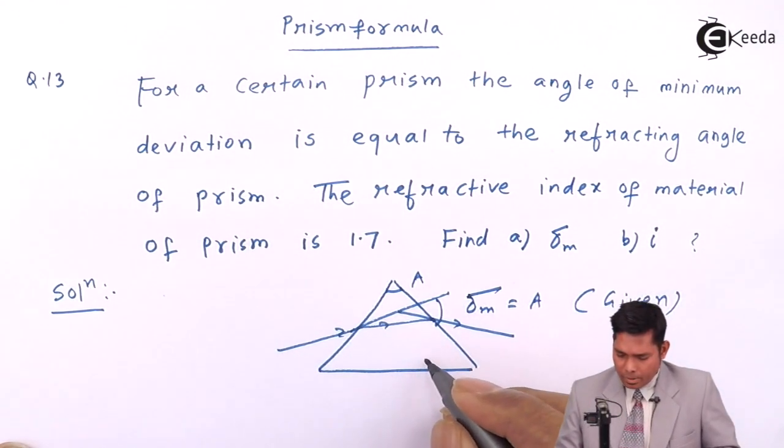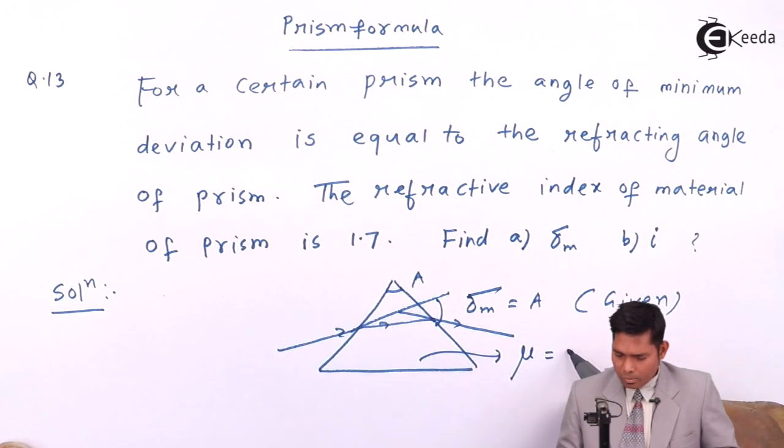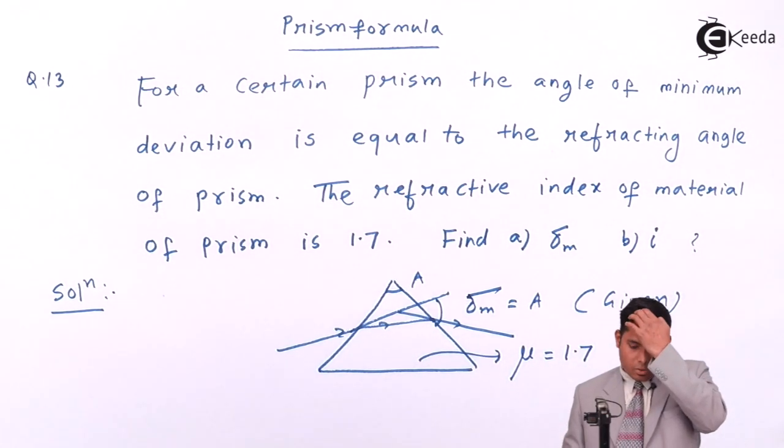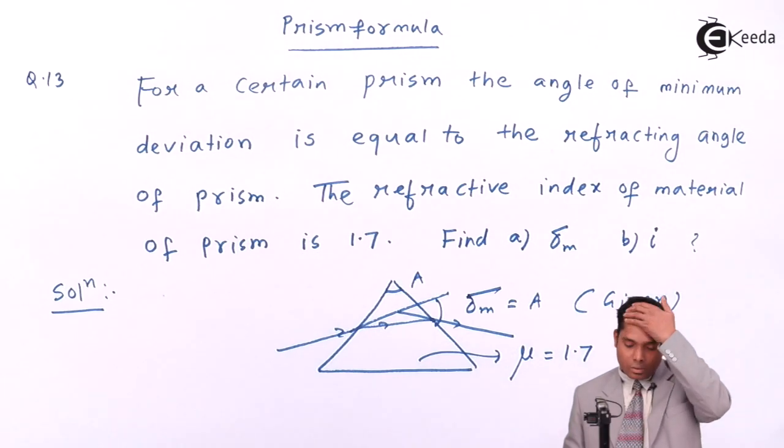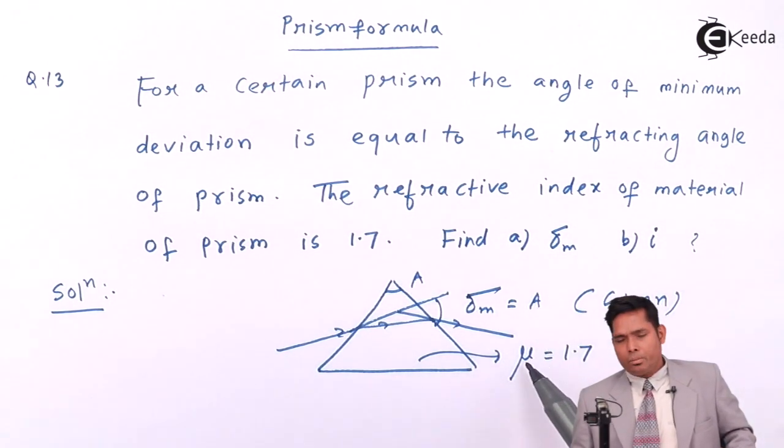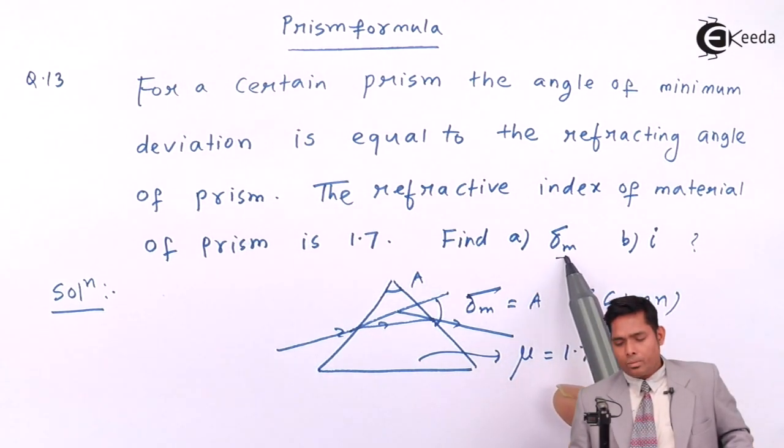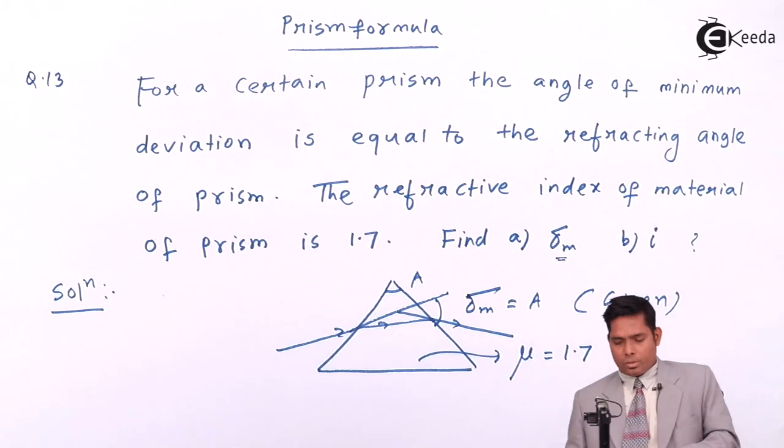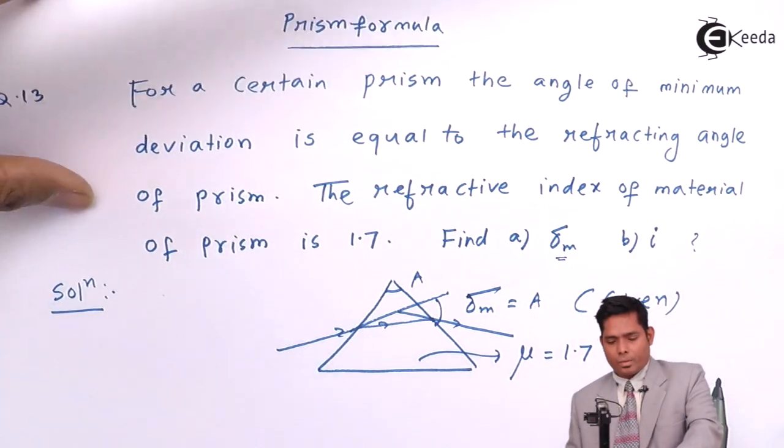And the refractive index of the material of the prism is 1.7. This is a very simple question. Put the value of A and mu in the prism formula and get the value. Let us solve this first.